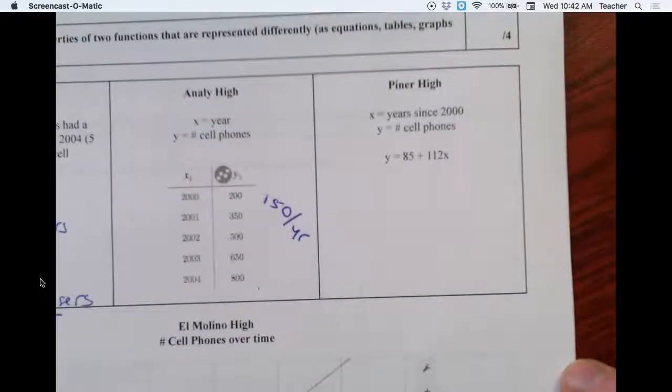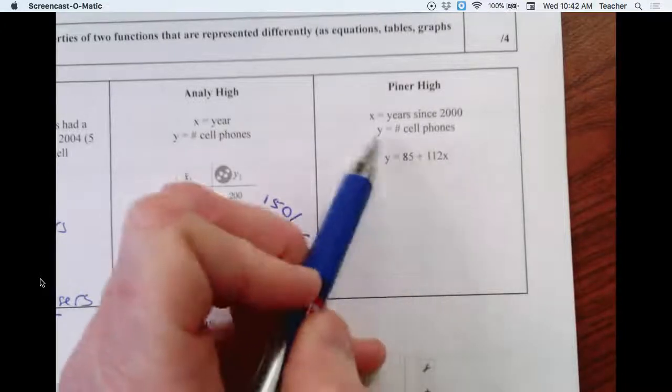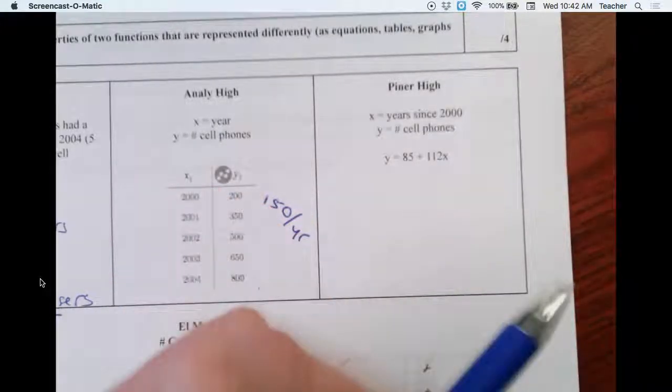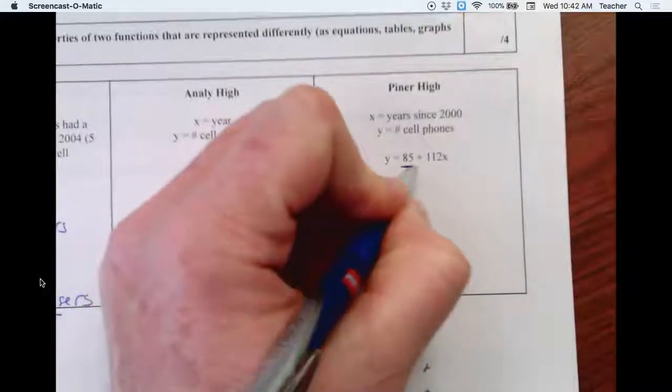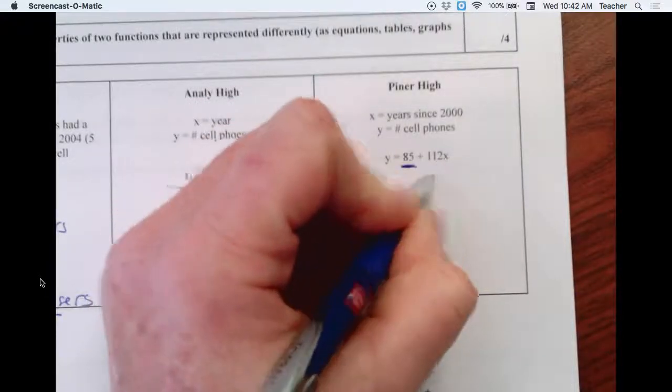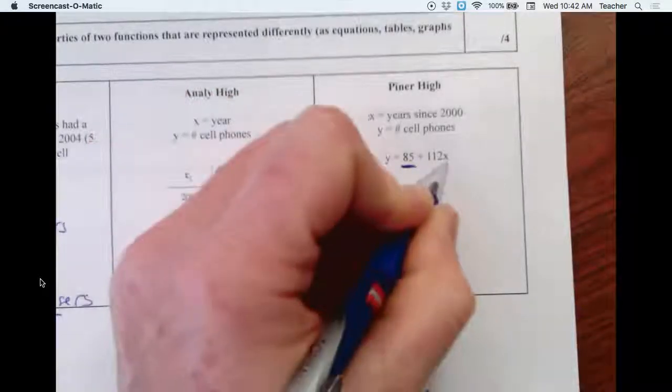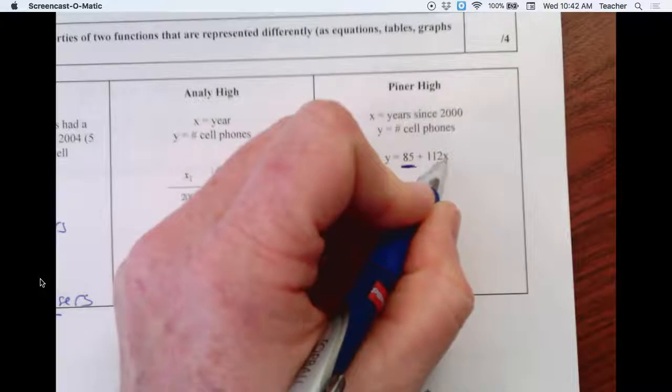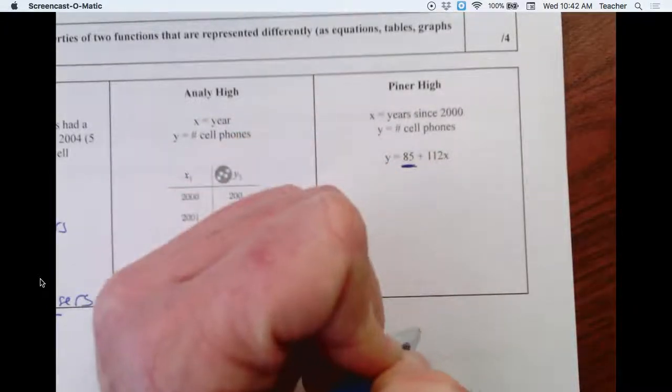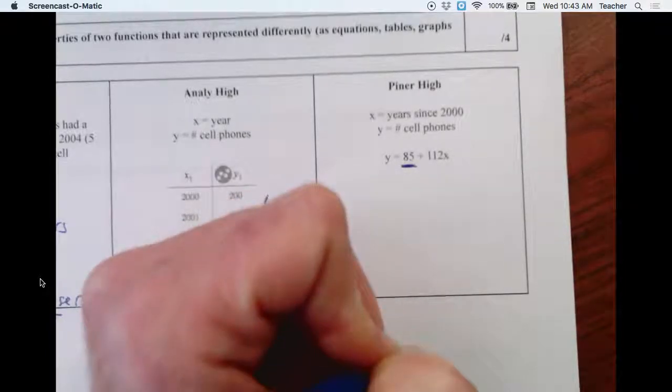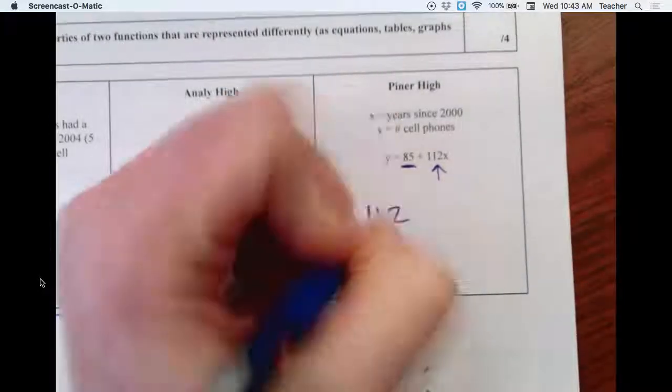Piner. X is years since 2000, and number of cell phones is going to be Y. This is in slope intercept form. So this is how much we start with. Years since 2000, we put a zero there. In the year 2000, they only had 85 people with cell phones. If you put one in there, so in 2001, it's years since 2000, so it'd be one. You would add another 112 to 85. In another year, you'd add another 112 and another 112. So this is my growth rate, the slope. So we have 112 per year.